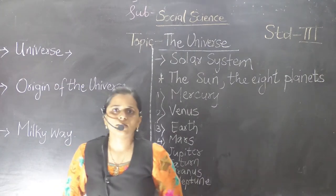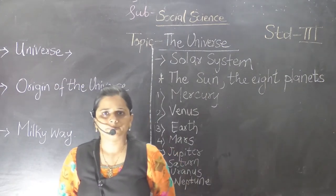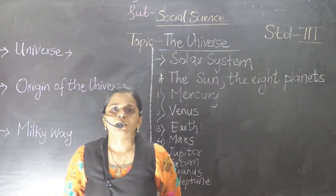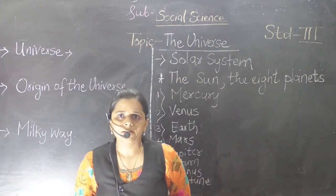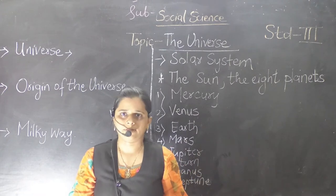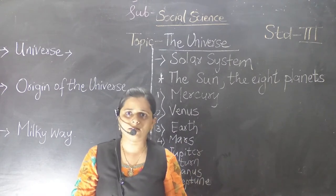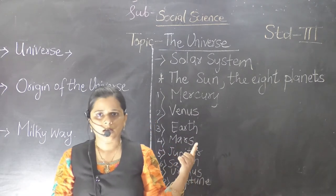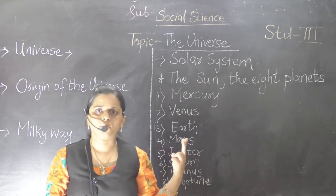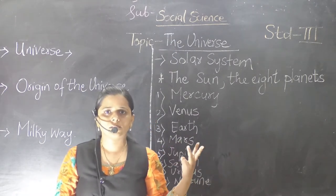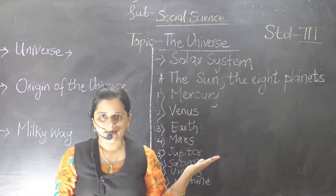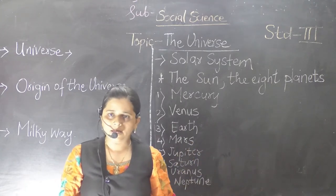Now what is the universe? The universe is the totality of everything that exists, such as the sun, moon, star, planet, and galaxy.